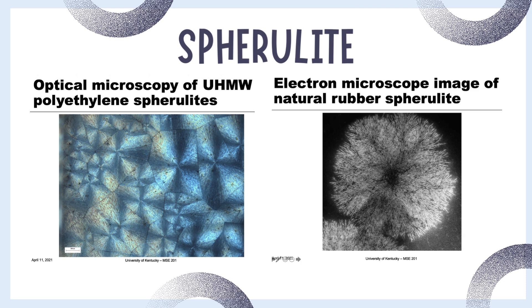The diagram on the left is an optical micrograph of ultra-high molecular weight polyethylene where you can clearly see the regions which are crystalline and amorphous. The diagram on the right is an electron micrograph of natural rubber spherulite where you can see its general shape, nucleating in the middle with branches growing out from it.